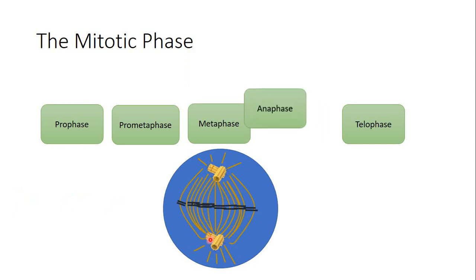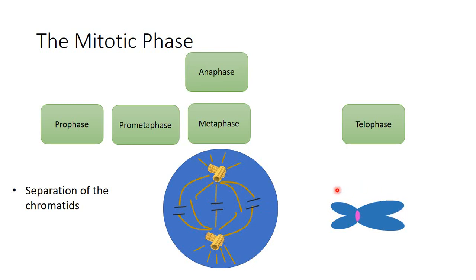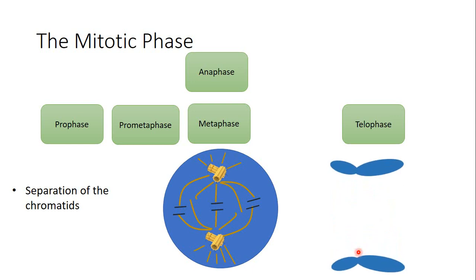Then the anaphase starts. In the anaphase, the two centrosomes continue to apply pulling forces, which separates every two sister chromatids from each other. The chromosome is attached to the microtubule, and because of the pulling forces from both sides, the two sister chromatids are separated from each other. At the end of the anaphase, I get exactly the same amount of DNA — exactly 46 chromosomes — at each side of the spindle.